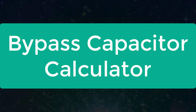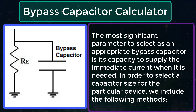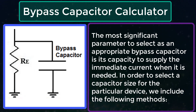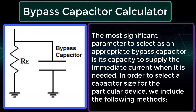Bypass Capacitor Calculator. The most significant parameter to select an appropriate bypass capacitor is its capacity to supply the immediate current when it is needed. In order to select a capacitor size for a particular device, we include the following methods.